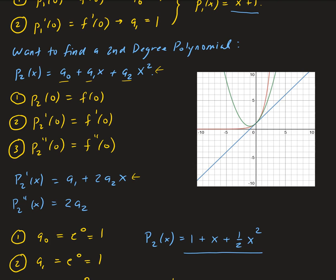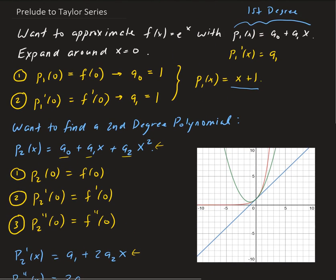We can continue this process and get better and better approximations as we introduce successive derivatives — a third degree polynomial, fourth degree, fifth degree, and so on. The idea is that this is going to give us a series. The question is: is this series going to converge? That's another topic we'll talk about later. But it seems intuitive that the higher the derivative we're using, the better the approximation — that's what seems to be happening from a geometric standpoint. In the next video, we're going to use this idea to prove the formula for Taylor polynomial approximation.